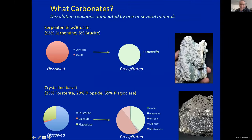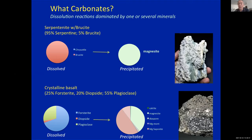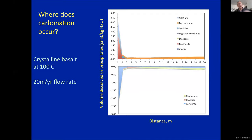A couple of details: it's different minerals in these rocks that carbonate. For example, in serpentine with brucite, even if it only has 5% brucite, it's only the brucite that dissolves and magnesite precipitates, giving a rock that looks like serpentine with magnesite on it. In crystalline basalt, which is only about 25% pyroxene or olivine, it's the pyroxene dissolution that dominates, and only about two-thirds of the secondary minerals that form are actually carbonate and magnesite — most of what forms are magnesium clays. We also get from these calculations the distribution of reactive minerals in these fractures.